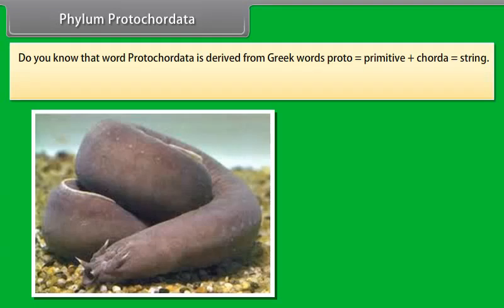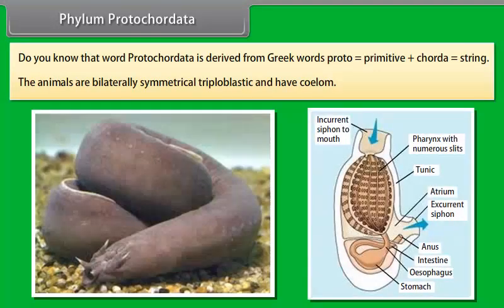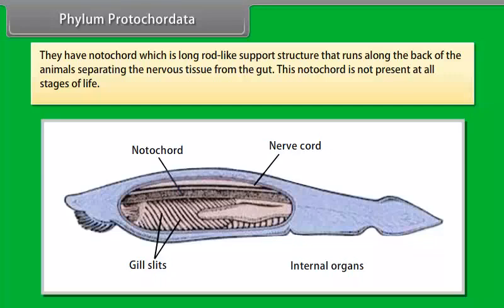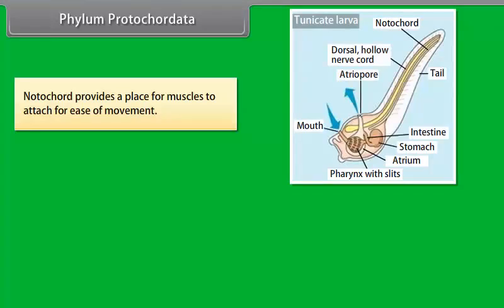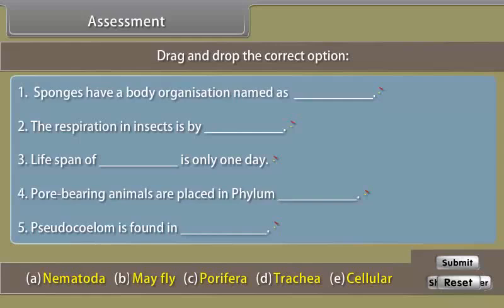Phylum Protochordata. The word Protochordata is derived from Greek words 'proto' meaning primitive, plus 'chorda' meaning string. The animals are bilaterally symmetrical, triploblastic, and have a coelom. They have a notochord, which is a long rod-like support structure that runs along the back of the animal, separating the nervous tissue from the gut. This notochord is not present at all stages of life. Notochord provides a place for muscles to attach for ease of movement. They are exclusively marine animals. A common example is Balanoglossus.